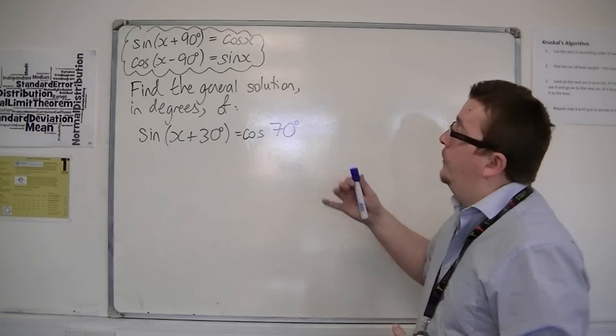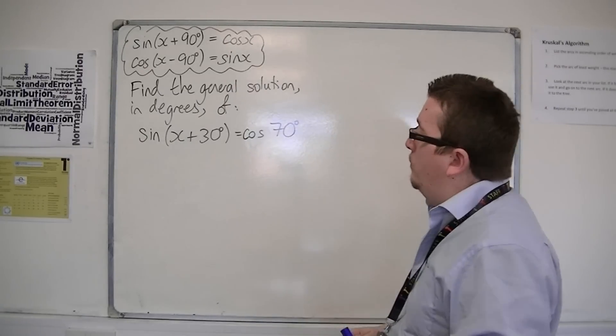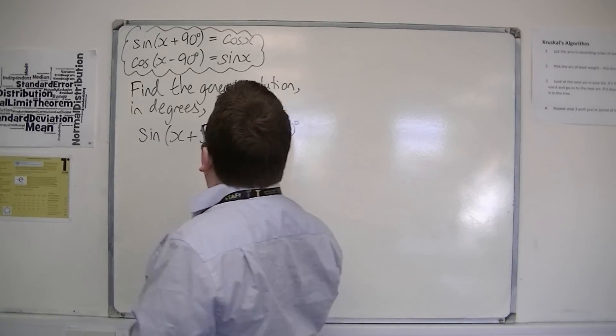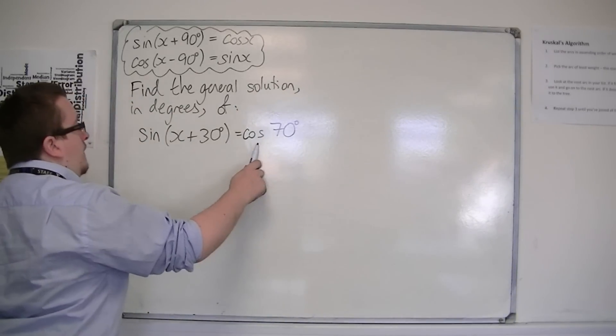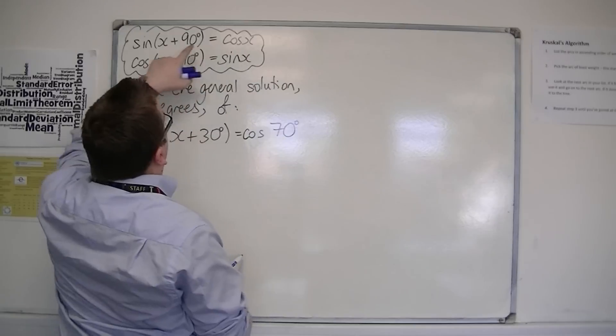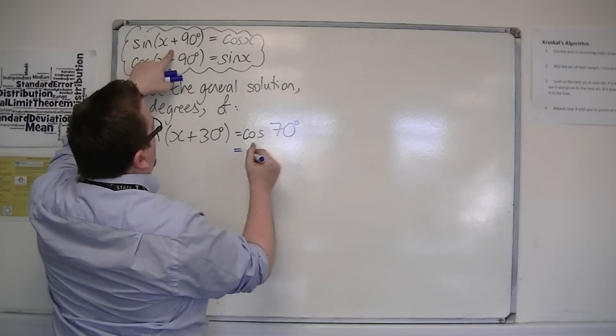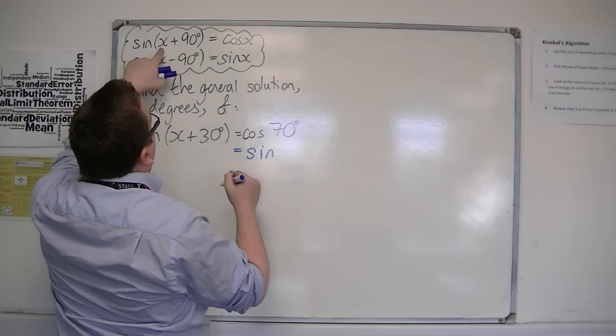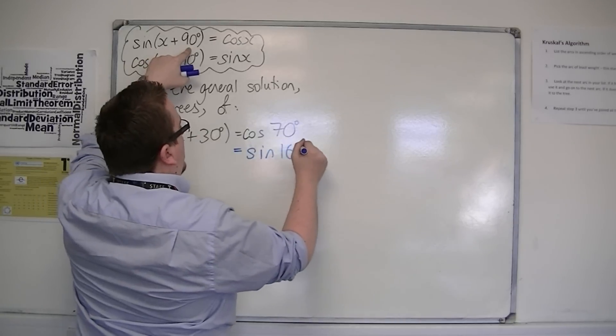And we can use these facts to help us here. Because if we look at cos of 70, then this is the same as sine of 70 plus 90, so sine of 160.